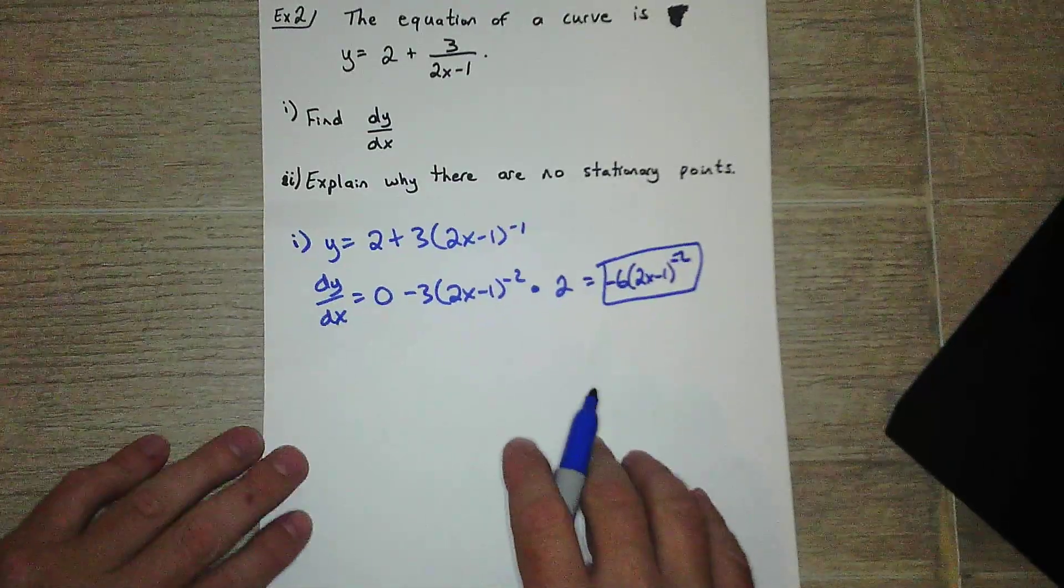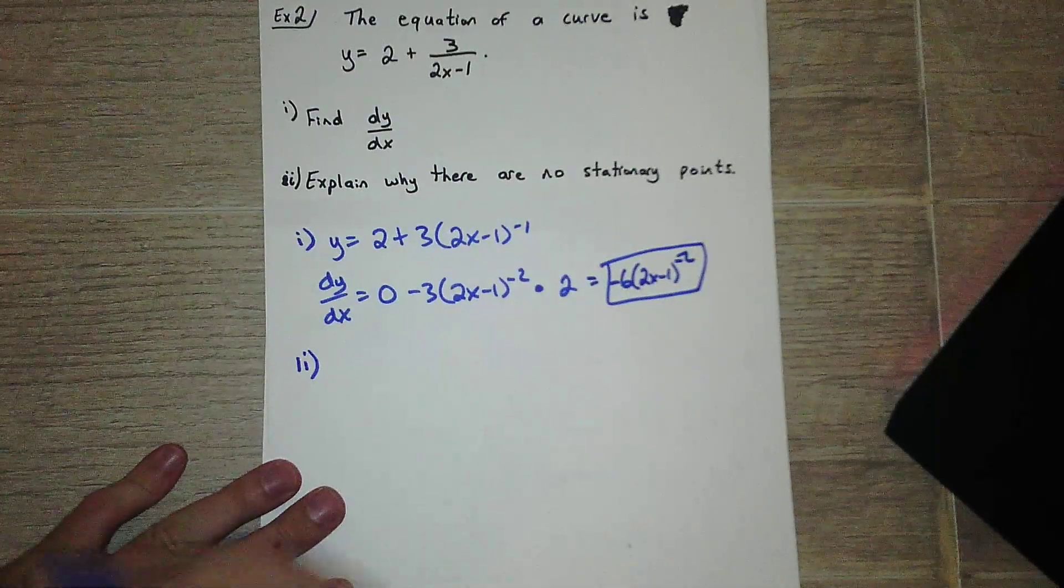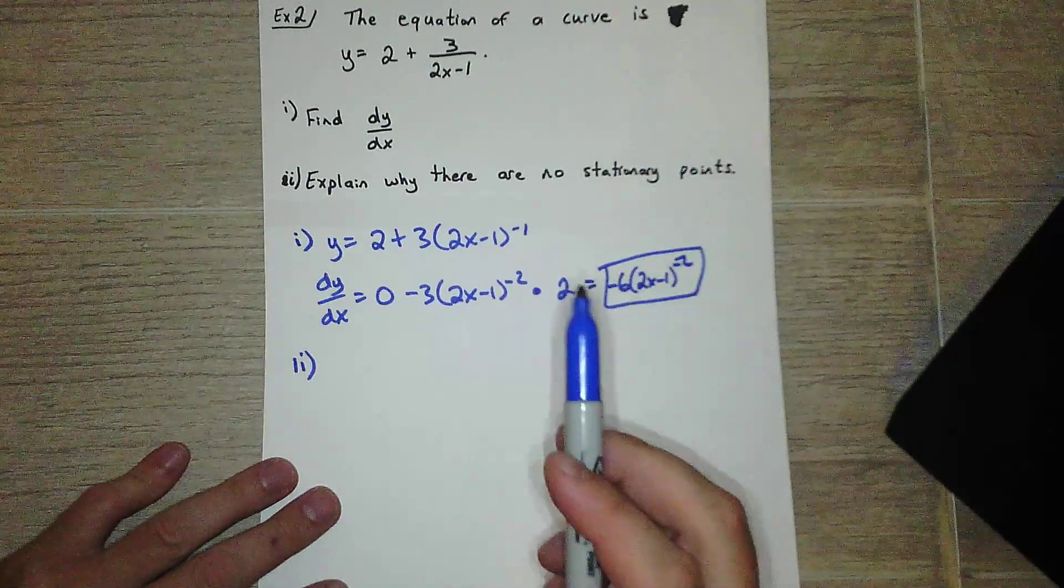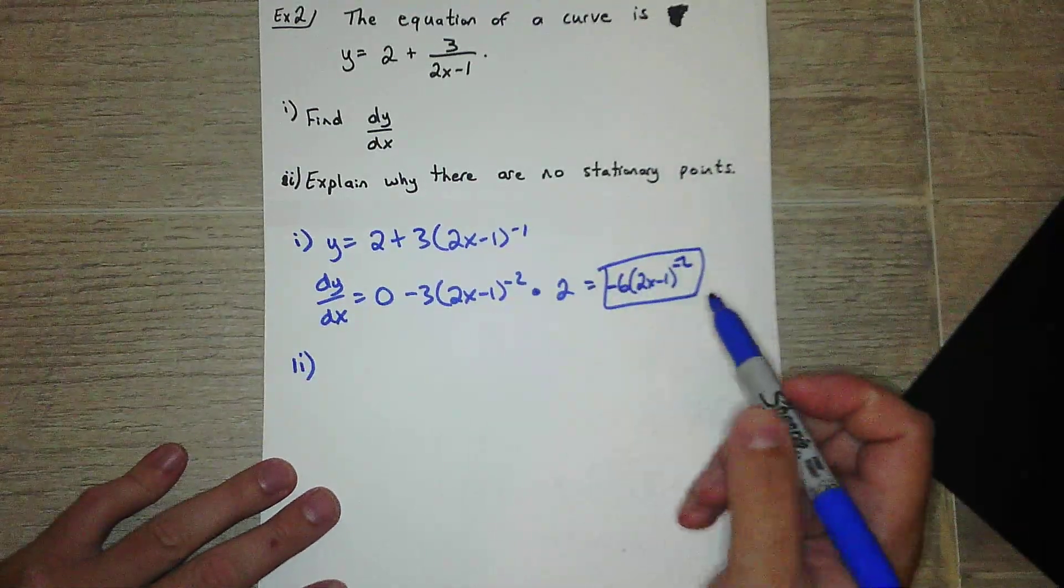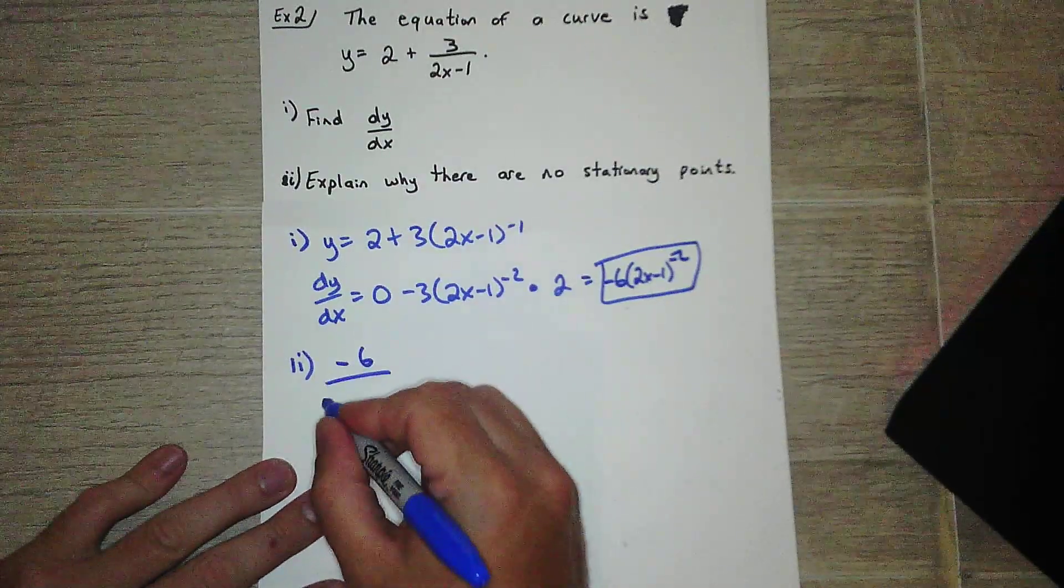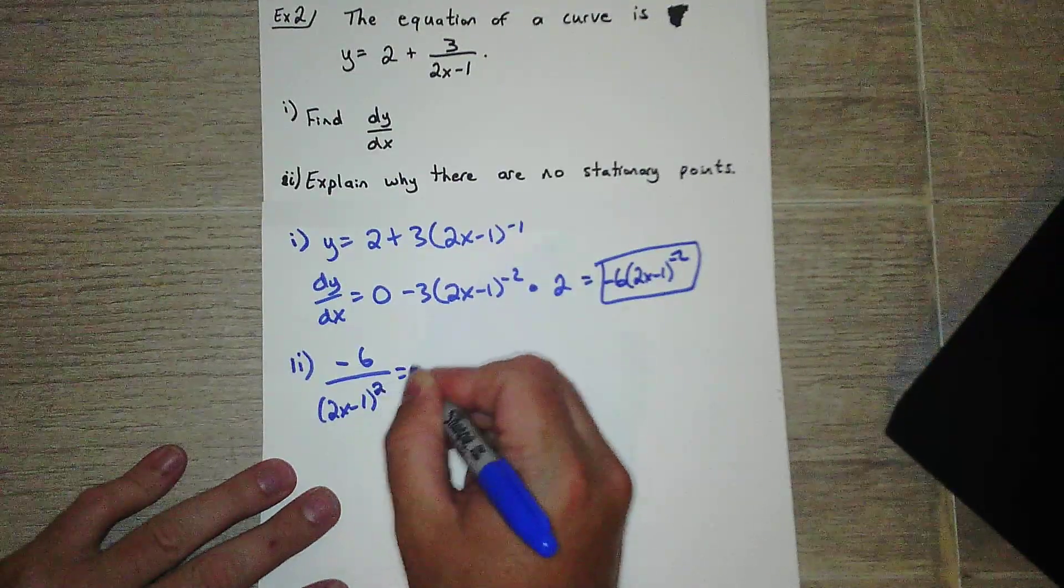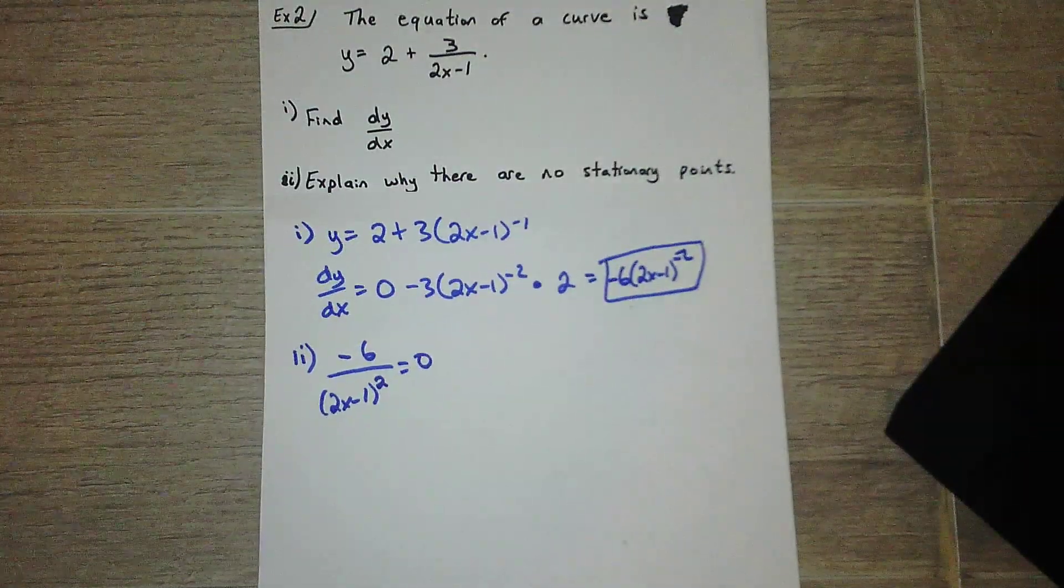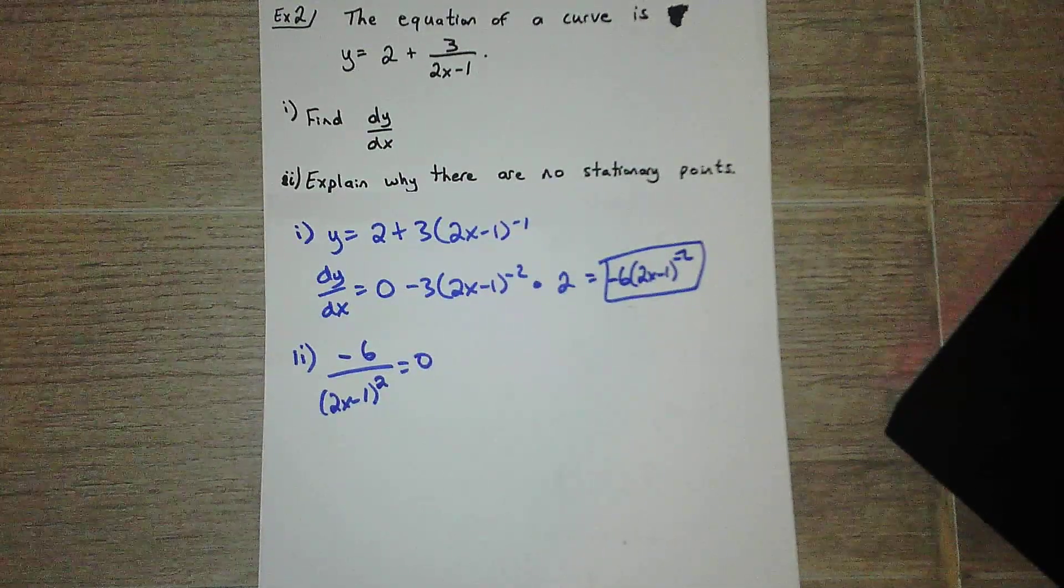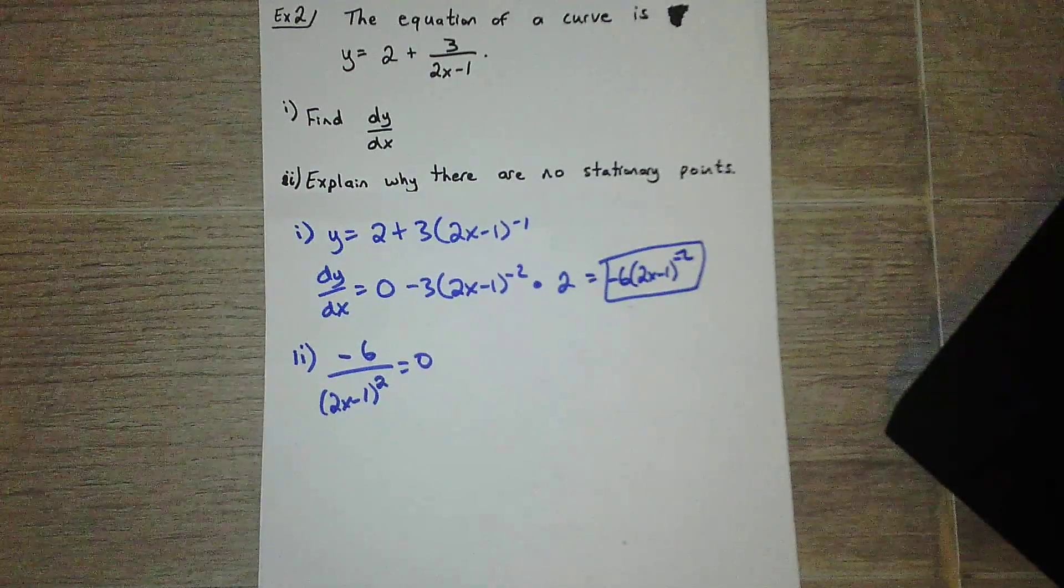All right, double i: Explain why there are no stationary points. Remember, stationary point is when the derivative is set equal to zero. So the only time there cannot be a stationary point is when this cannot equal zero. So why exactly can this not equal zero? Well, try and solve it out and you'll see you'll get something that is not true.